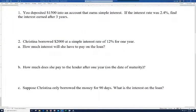It says you deposited $1,500 into an account that earns simple interest. If the interest rate was 2.4%, find the interest earned after three years. So here all we're doing is finding the interest, the simple interest rate. So it's I equals PRT. The principal is $1,500.